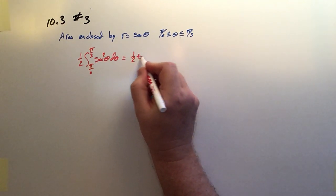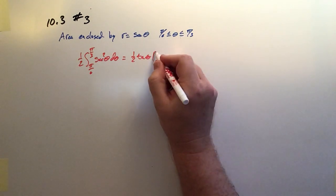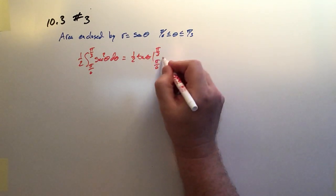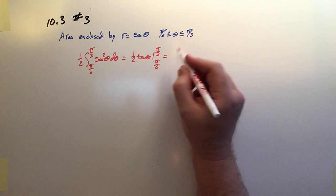So this is one half of tan theta between pi over 6 and pi over 3. And that turns out to be equal to radical 3.